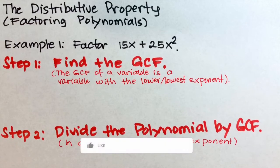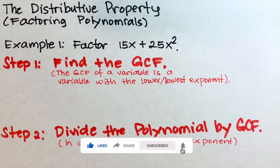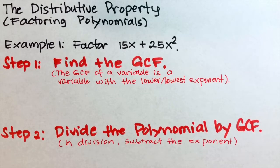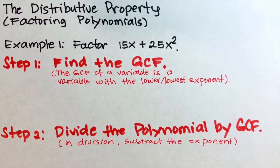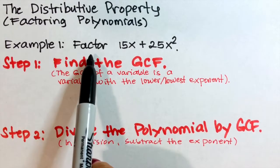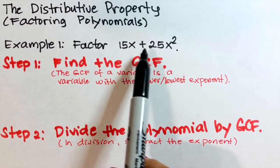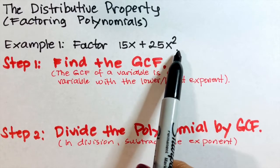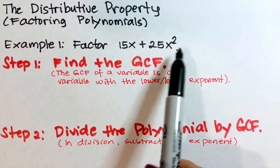There are different ways to factor a polynomial, but we will use the distributive property to factor each polynomial given in two easy ways. Let's have example number one: factor 15x plus 25x squared.